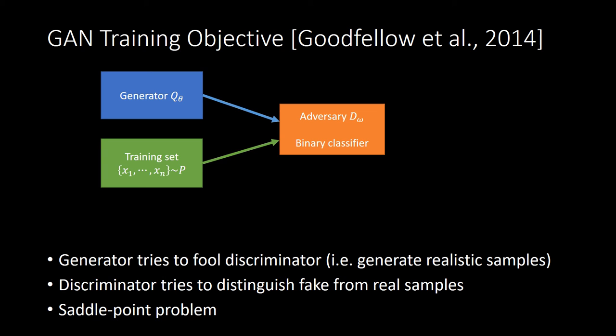Together, this forms a mathematical saddle point problem in which one network, the adversary, and the generator play against each other.